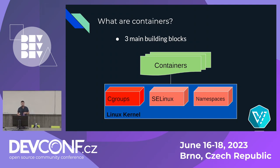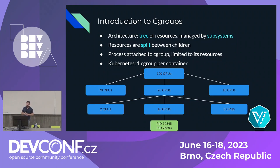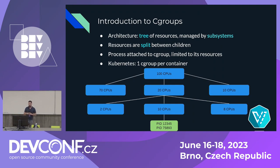Let's dive into cgroups. Cgroups lets you split the resources of the node between groups of processes. The architecture is a tree of resources — for example, on a system with 100 CPUs, we can split them into children, and every process is attached to one cgroup. A group of processes could be limited to 10 CPUs, for instance. In cgroups there are subsystems: for example, the CPU subsystem, and also subsystems for memory, IO, huge pages, and others. In the Kubernetes model, each container gets one cgroup.